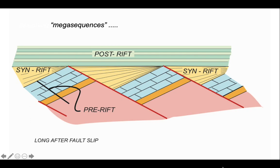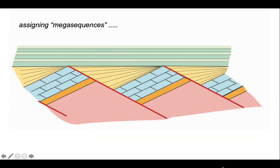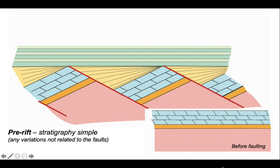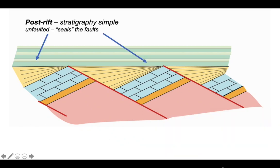These megasequences are separated by unconformities. Let's think about how we might assign these megasequences. The pre-rift strata are simple, so any variations are at a length scale that are not associated with the faults, and of course these units are faulted. The post-rift strata were deposited after faulting so they're unfaulted and they stratigraphically seal or overlap the fault blocks.